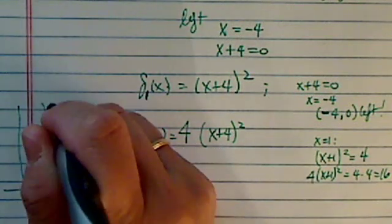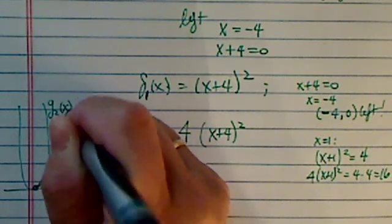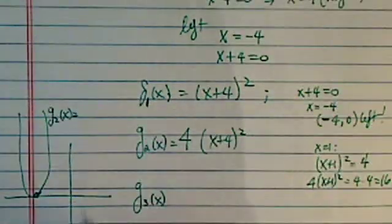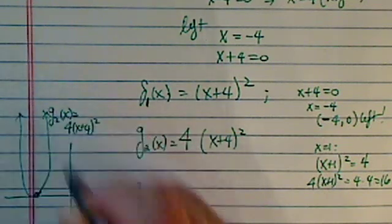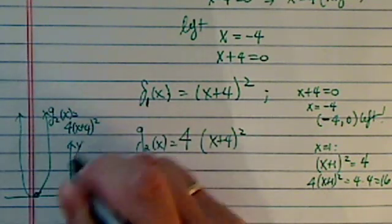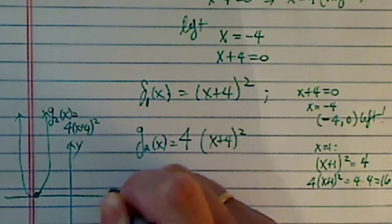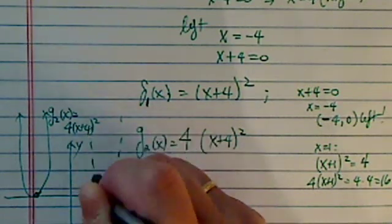So this is the g(x) that we had earlier that was 4(x + 4)². Now we're going to reflect it by y-axis. So basically, it's going to come over here now.